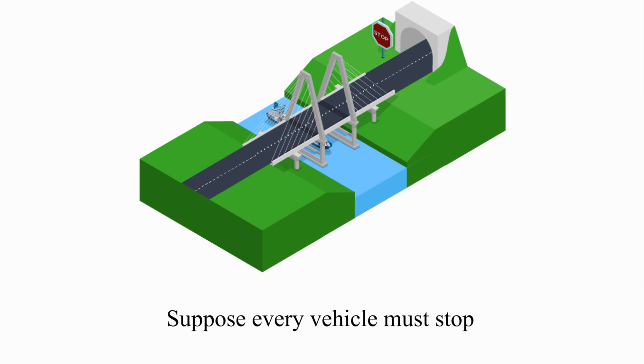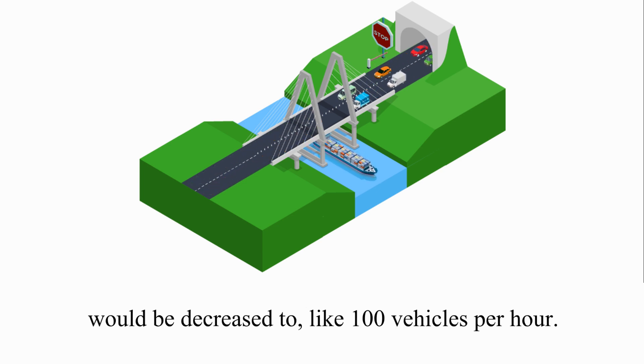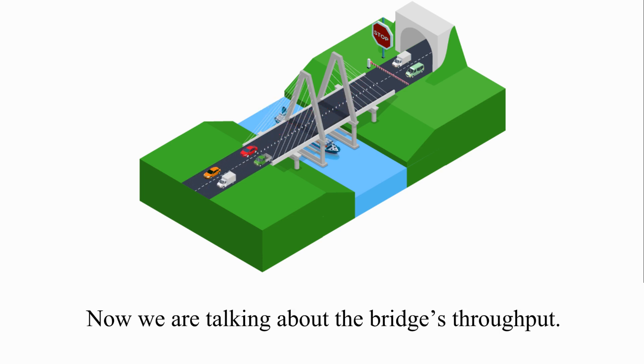Suppose every vehicle must stop to pay the crossing fee, the actual number of vehicles passing the bridge would be decreased to like 100 vehicles per hour. Now we are talking about the bridge's throughput.